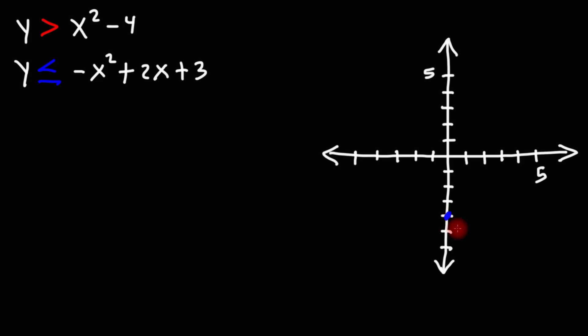So the y-intercept is going to be right here. It's going to be at negative 4. Now, for this graph, what we can do is find the x-intercepts as well.